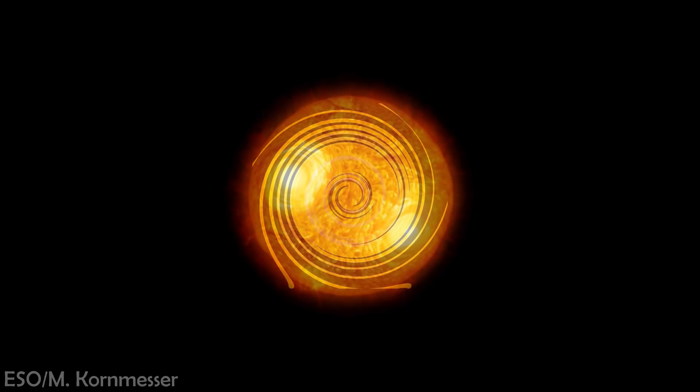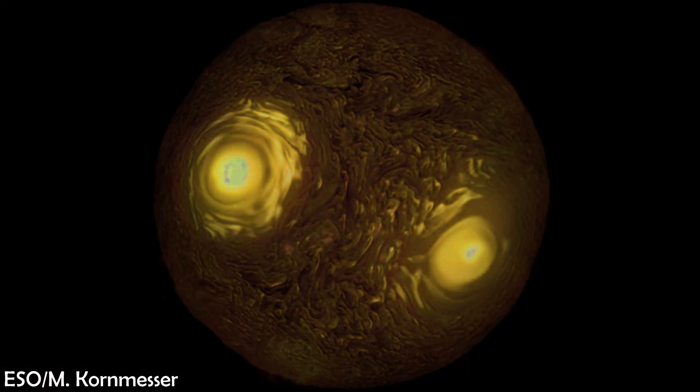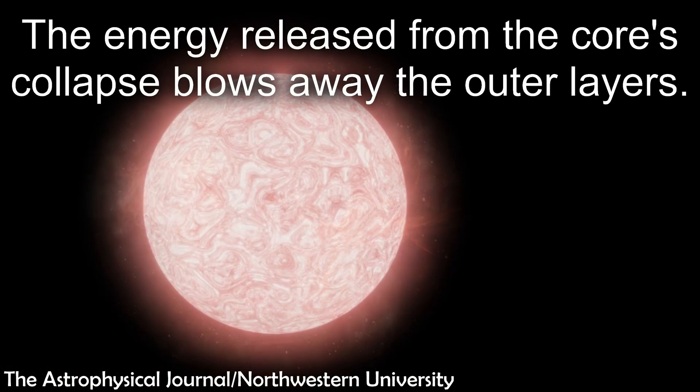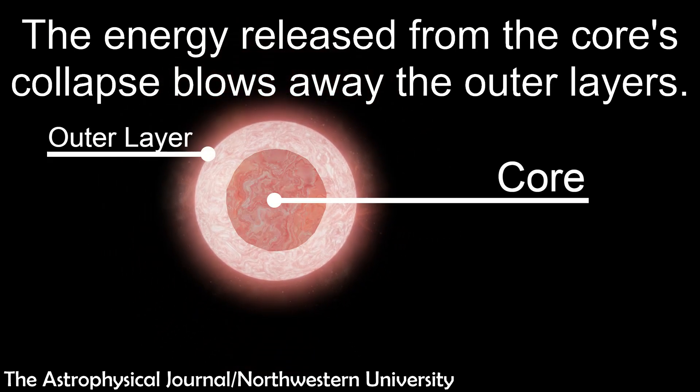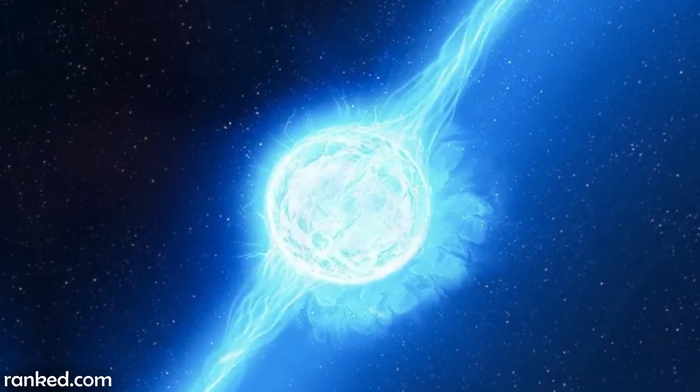A Neutron Star is a really super gigantic star. Except it ran out of gas. Basically, the core collapses. Then outer layers are blown away in this cool explosion called a supernova. And boom, you've got your Neutron Star.